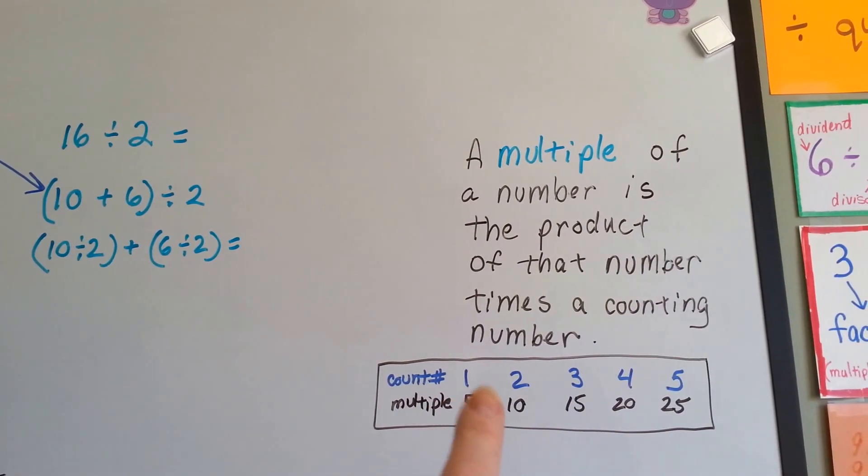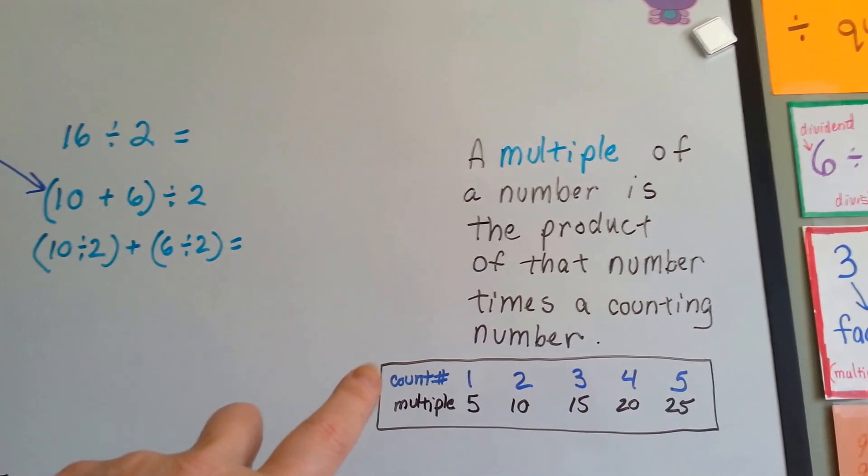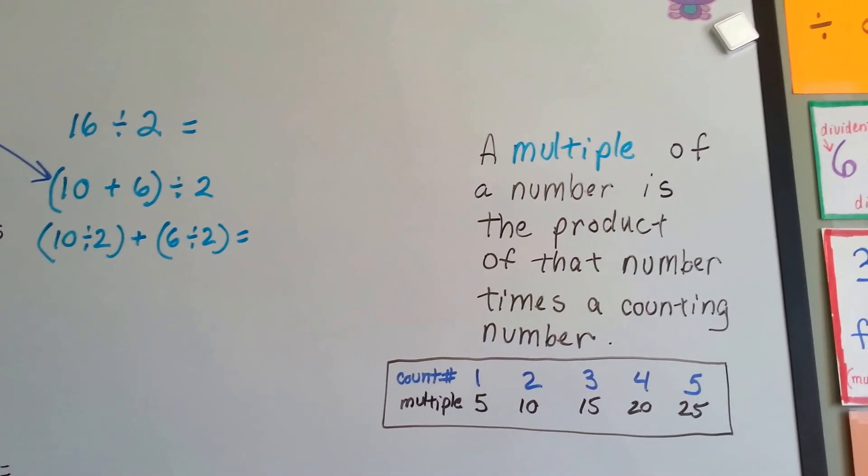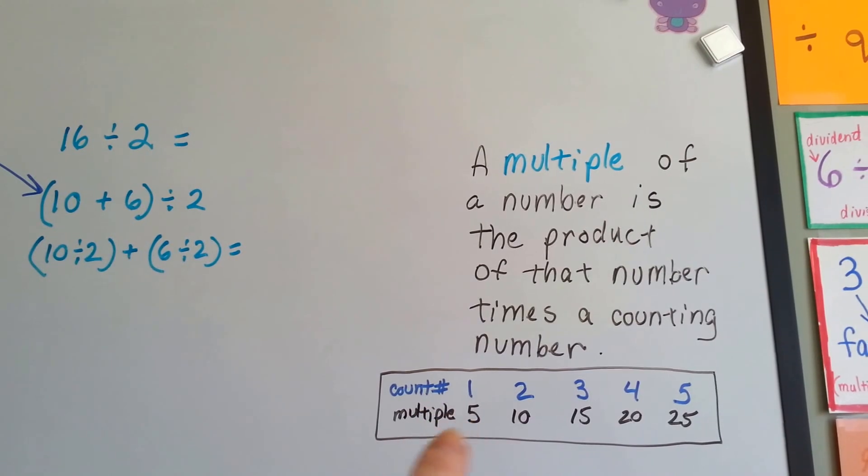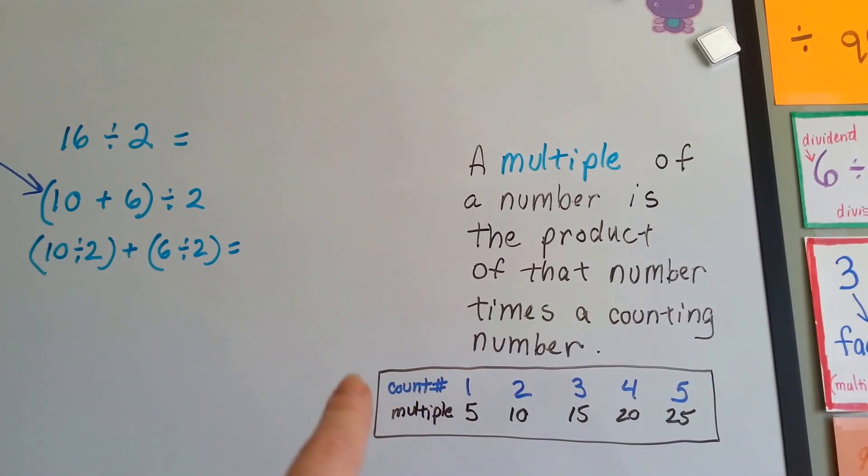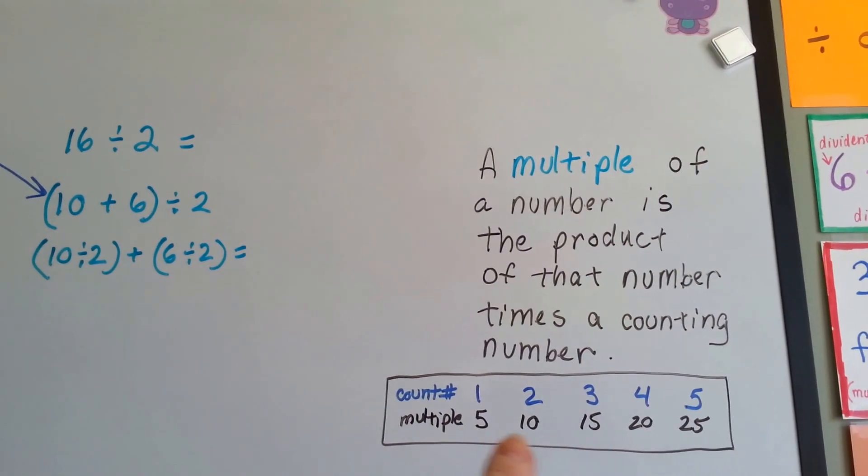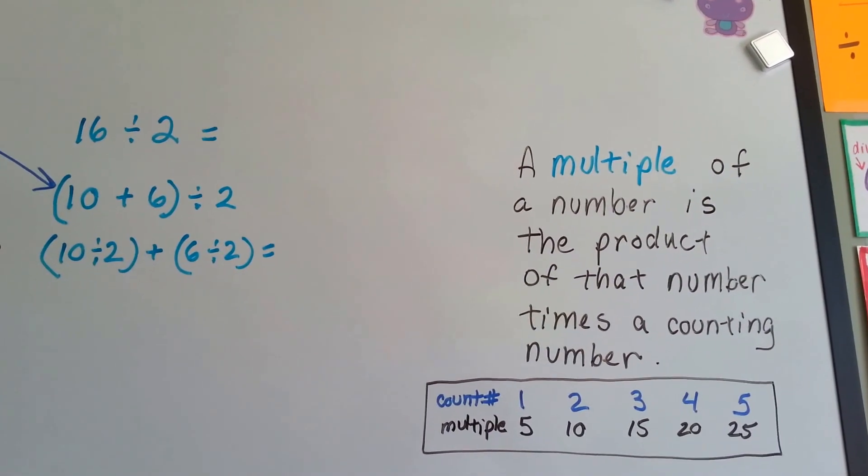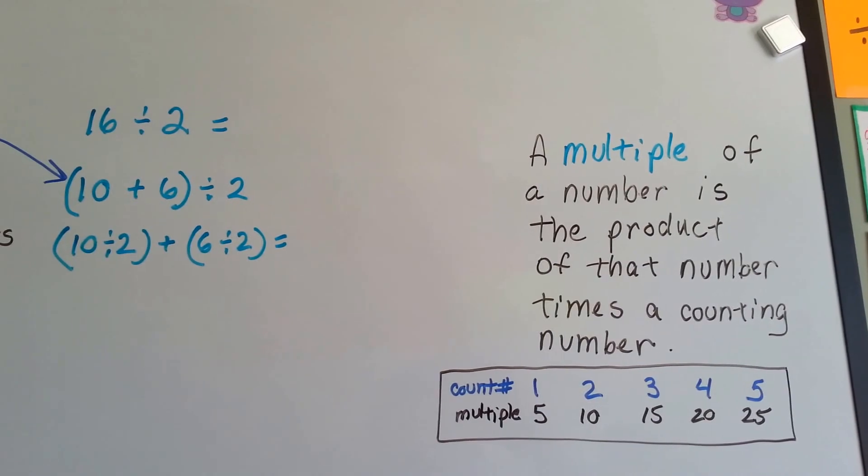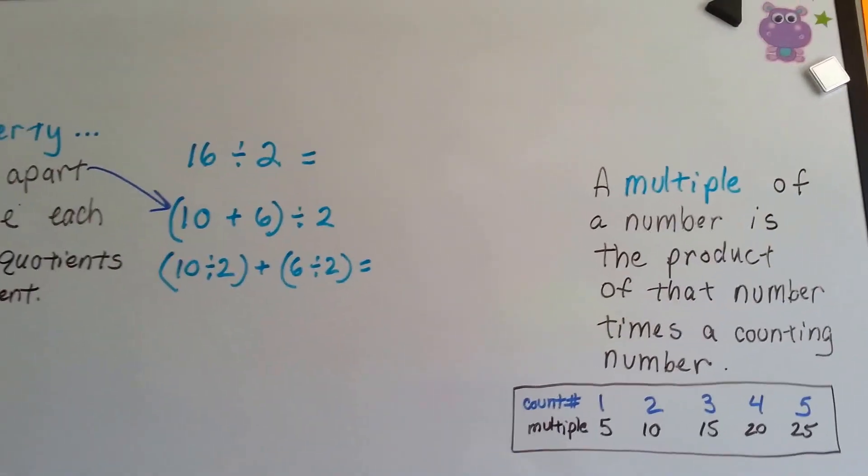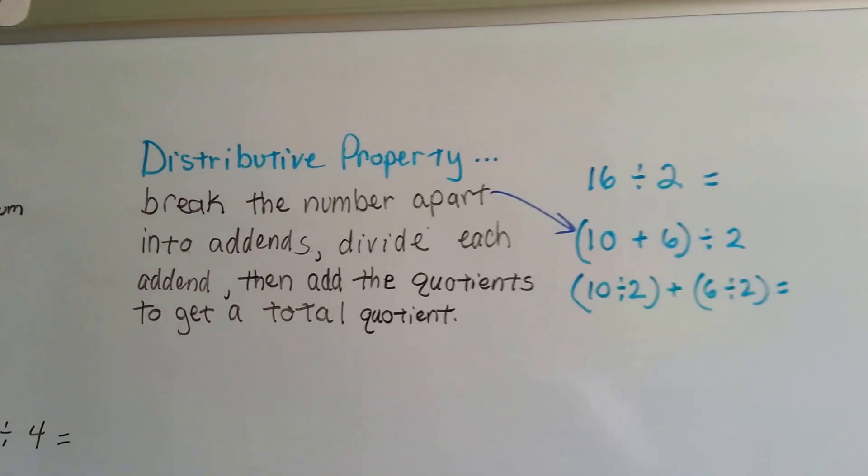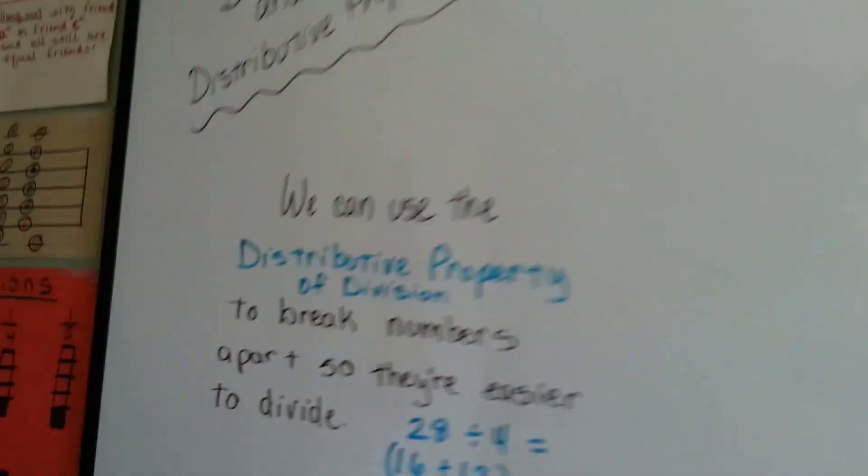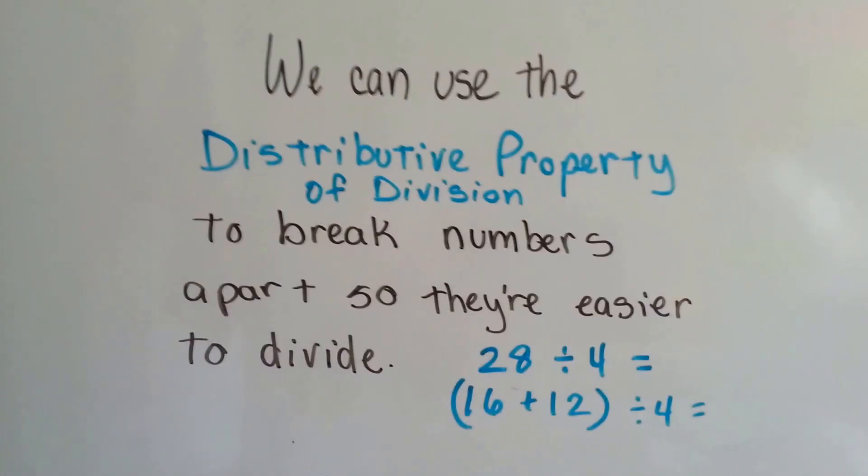See, counting number 2, 3, 4. And the reason they say counting number is so that you don't use fractions and you don't use decimals. It's a counting number, a regular everyday counting number. So that number, like if we're choosing to find multiples of 5, would be all the answers of the 5 times table. A multiple of 3 would be the answers of the 3 times table. I'll show you and explain that in one second even better.